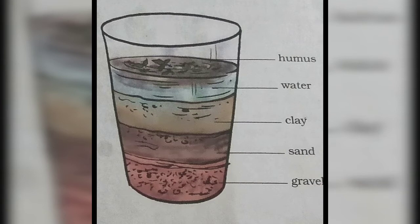Afterwards, we see the layers arrange themselves in the glass tumbler based on their size. So, let us know how these layers are arranged.